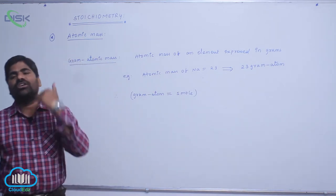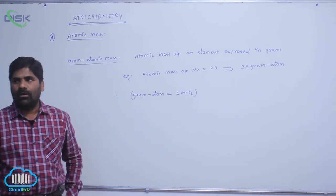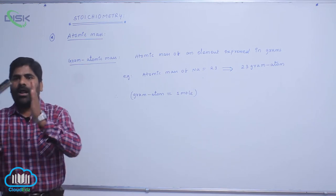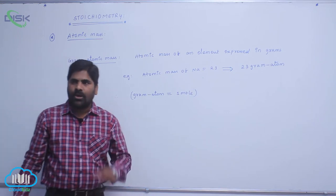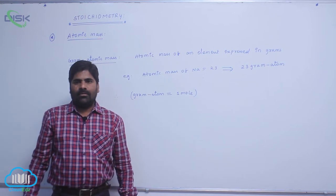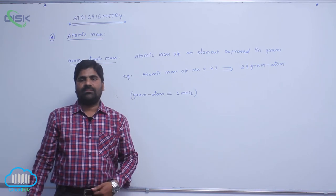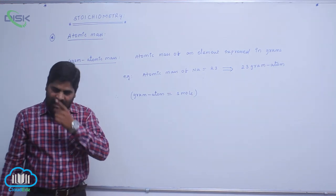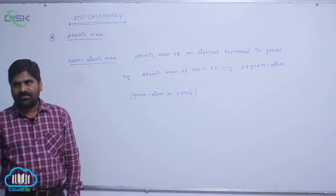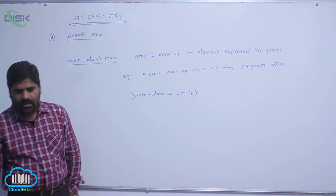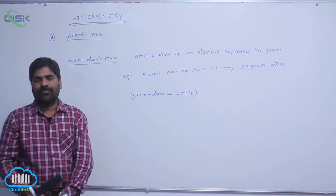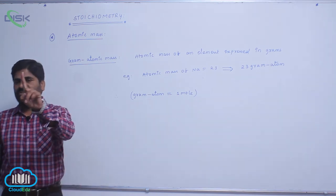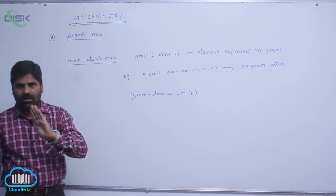If you are taking a molecule, we consider gram molecule. For example, the nitrogen N2 molecule has two nitrogen atoms. Each nitrogen atom contains 14 grams, so N2 molecule contains 28 grams. This 28 gram molecule indicates one mole.